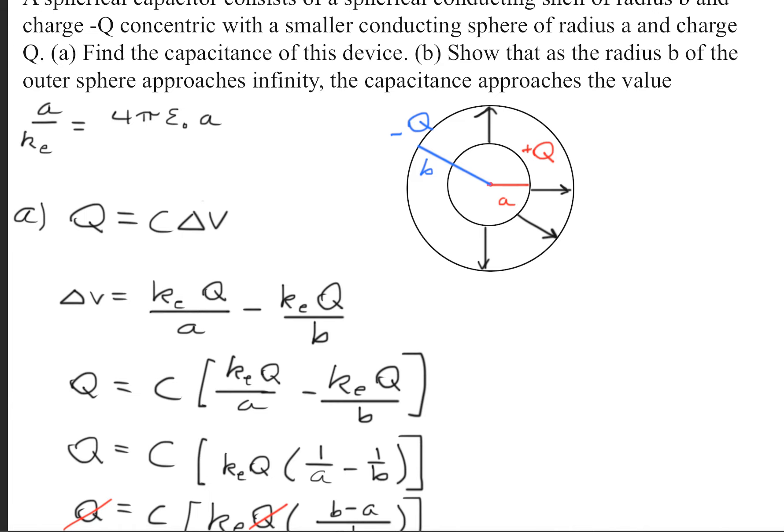In order to do that, what we need to do is take the limit as b approaches infinity. We're going to focus our attention on this ΔV, the potential difference.